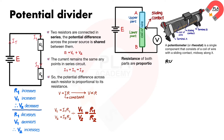The resistances of both parts are proportional to the length of each part. Their potential differences are proportional to the resistance of each part, and so their potential differences are also proportional to the length of each part.